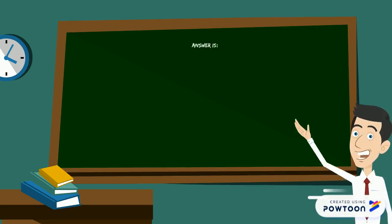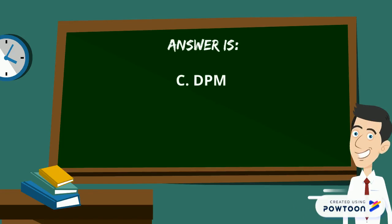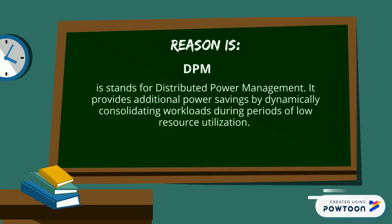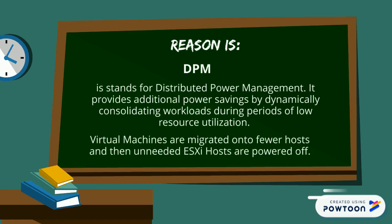The answer is C, DPM. Let's understand the reason why. DPM stands for Distributed Power Management. It provides additional power savings by dynamically consolidating workloads during periods of low resource utilization. Virtual machines are migrated onto fewer hosts and then unneeded ESXi hosts are powered off by DPM.